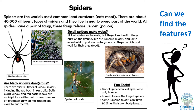Are black widows dangerous? There are over 30 types of widow spiders, including the redback in Australia. Both black widow and redback widow are mainly black with a red tummy to warn off predators — a predator is any animal that might want to eat them. Fun facts: not all spiders have eight eyes, some only have six. Tarantulas are the largest spiders. Some jumping spiders can jump 30 times their own body length. And there are some pictures there with some captions.